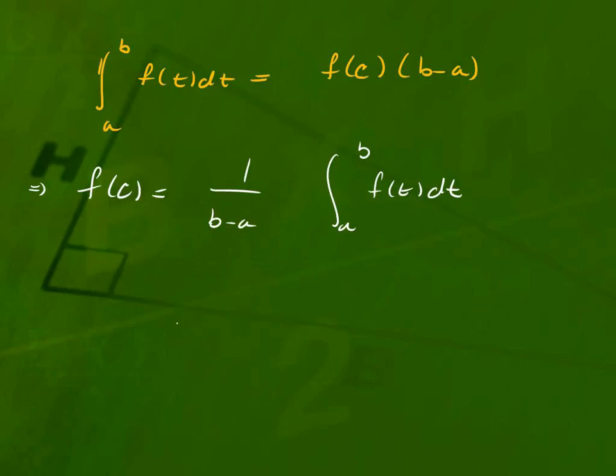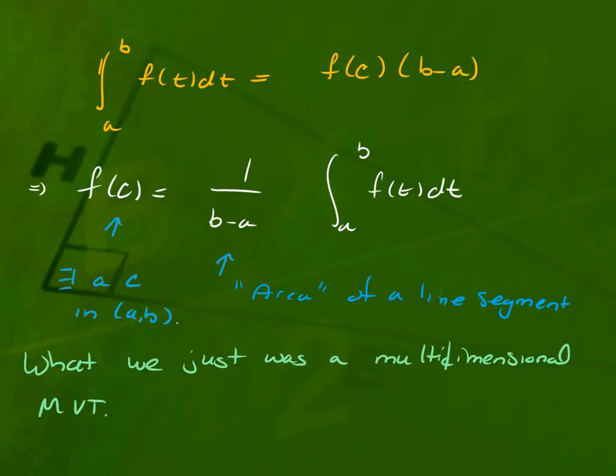I'm sure, I don't know how many of you took physics further than the required physics, but you use this a lot in physics. There's a connection. It's the area of the line segment. So what we just looked at was a multidimensional version of the mean value theorem.